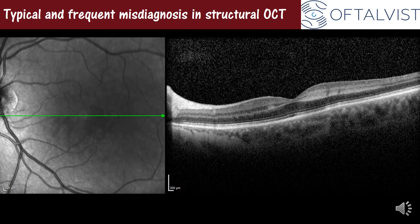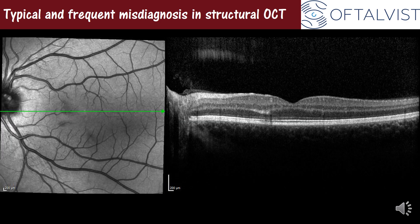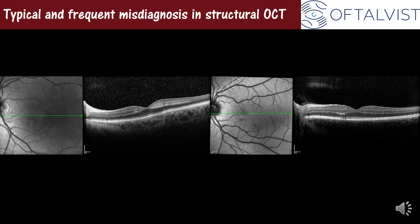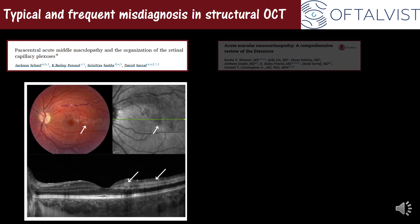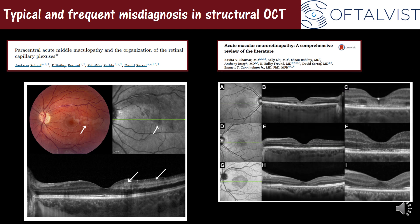It is also frequent to find confusion or misdiagnosis between these two images. To the left, we can see the typical appearance of a patient with paracentral acute middle maculopathy, PAM. To the right, the typical OCT appearance of a case of acute maculoneuroretinopathy, AMN. It is impossible to talk about these entities without making reference to Dr. David Sarraf's work, and here we can see two examples of publications illustrating the difference between them, the impact of making an accurate differentiation, and how important it is to recognize the structural features in OCT imaging to correctly identify the disease.